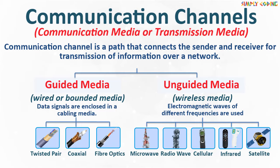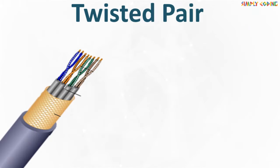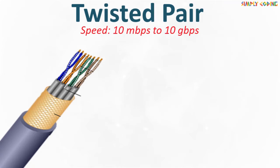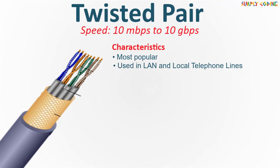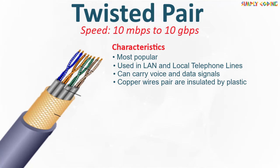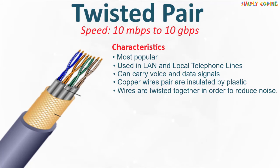Let's take a look at various guided media in detail. First is twisted pair wire. It has a data transmission speed between 10 Mbps to 10 Gbps. It is the most popular and is used as communication media in LAN and local telephone lines. It can carry voice and data signals. Signals are transmitted using copper pair wires which are insulated by plastic that have been physically twisted together.